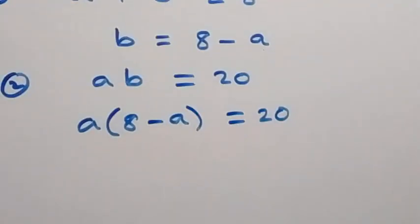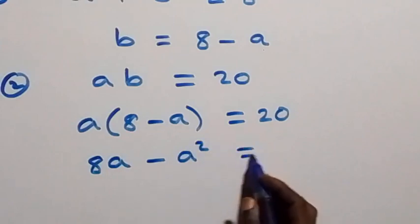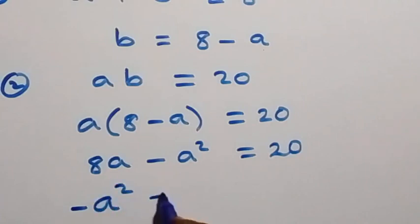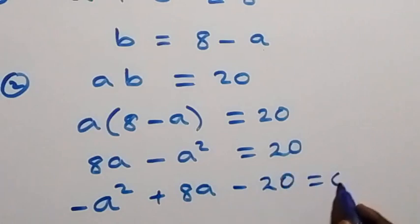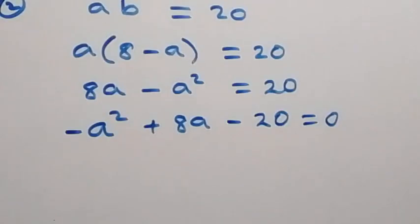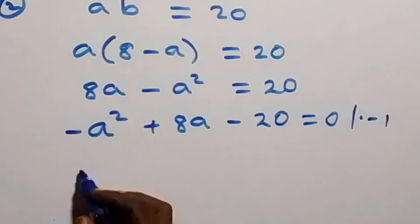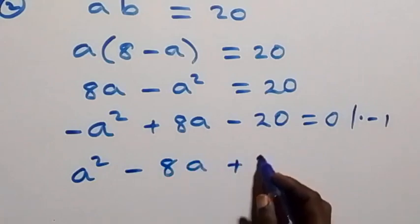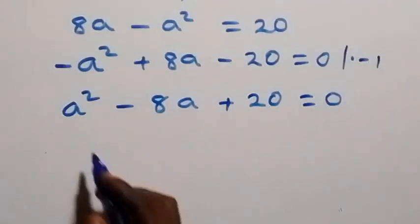Opening the bracket we have 8a minus a squared equals to 20. When we rearrange, we have minus a squared plus 8a minus 20 equals to zero. To remove the minus we multiply through by minus one, and this becomes a squared minus 8a plus 20 equals to zero. Here we have the quadratic equation.